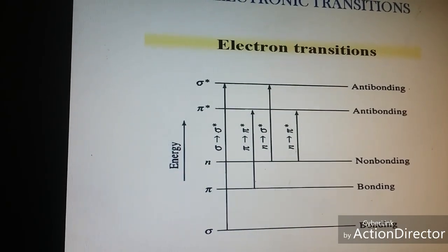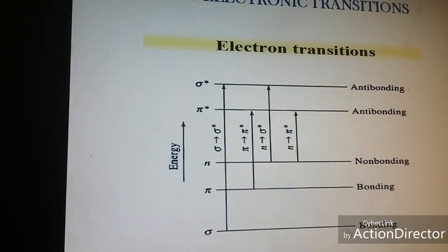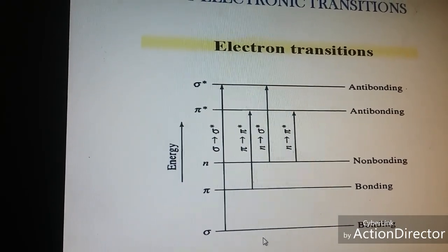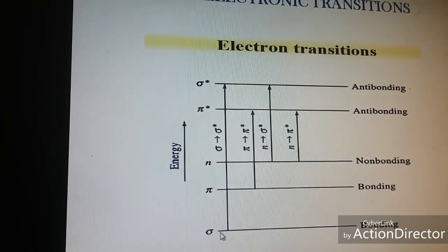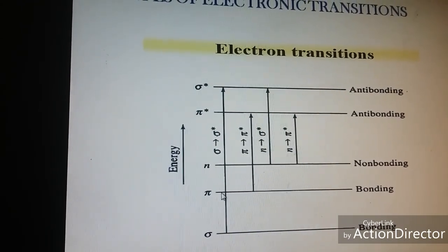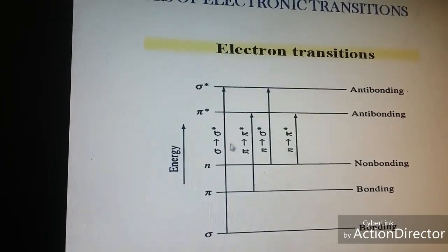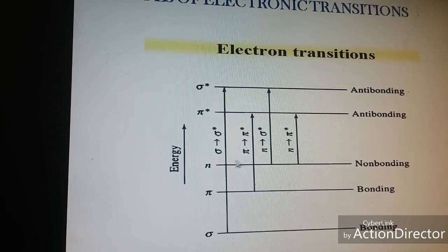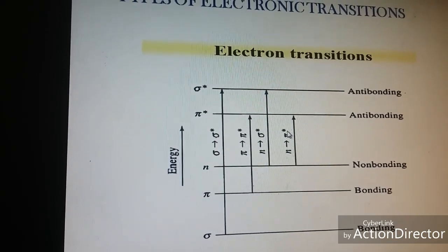Now let us come to electronic transitions. Electronic transitions depend on the type of bonding present — it can be sigma to sigma star transition, pi to pi star, n to sigma star, and n to pi star.